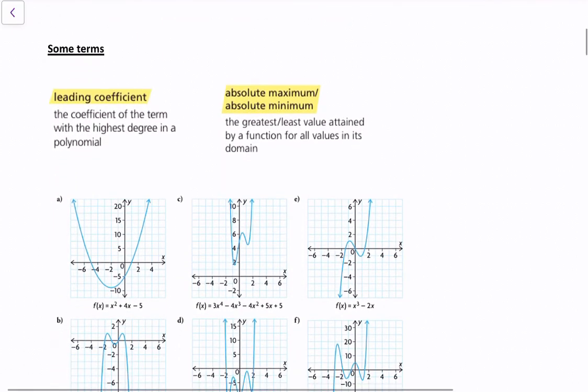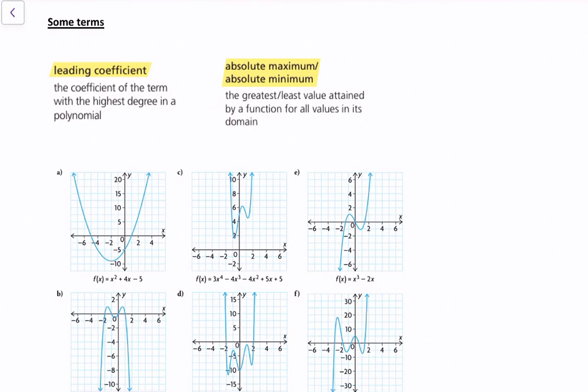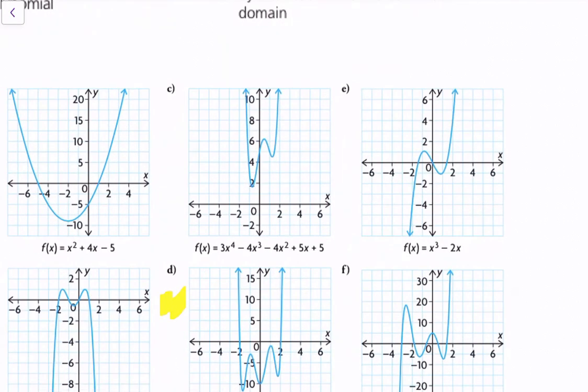First, let's begin with some terms. The leading coefficient is the coefficient of the term with the highest degree in the polynomial. For example, using the function in part b, the highest degree is x to the power of 4, so the leading coefficient would be 3.